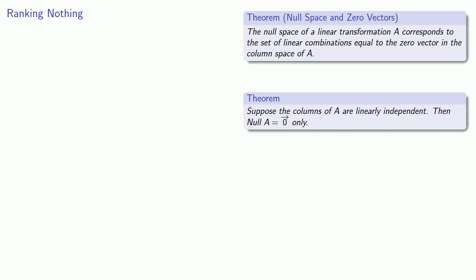This allows us to go even further. Remember that the rank of a matrix is the number of non-zero rows in the row echelon form of A.